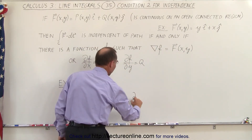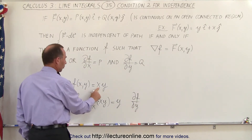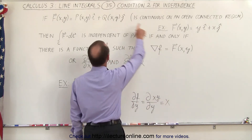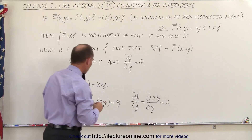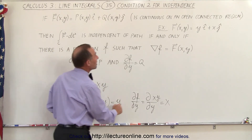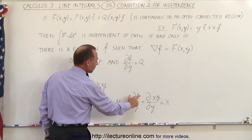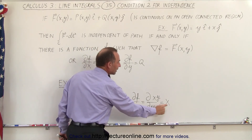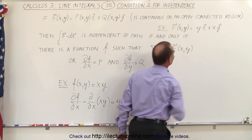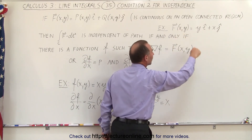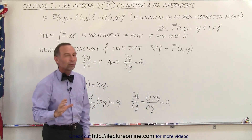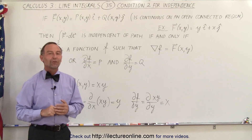Now taking the partial of f with respect to y: the partial of x times y with respect to y equals x, which matches the function Q in our example. So if we find a function — here x times y — such that its partial with respect to x gives the i-component P and its partial with respect to y gives the j-component Q, then the line integral over a closed loop equals zero, and the line integral from point A to point B is the same regardless of path. That is the condition for path independence for line integrals.